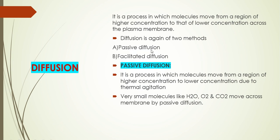First, let's look at passive diffusion. Diffusion means moving of molecules or nutrients from higher concentration to lower concentration. In passive diffusion, this occurs under conditions where the external concentration gradient is sufficiently higher than the concentration inside the cell. If not, it can be achieved by thermal agitation. Molecules like carbon dioxide, water, and oxygen move across the plasma membrane by this mechanism called passive diffusion.